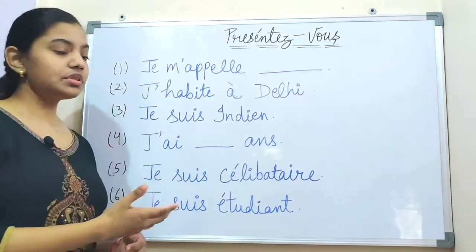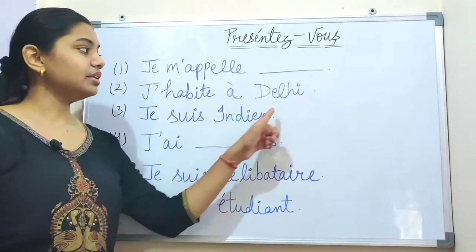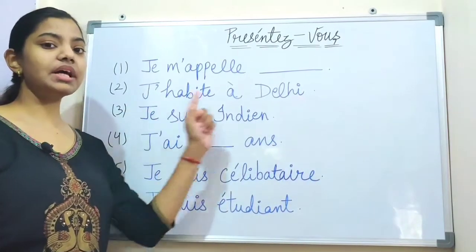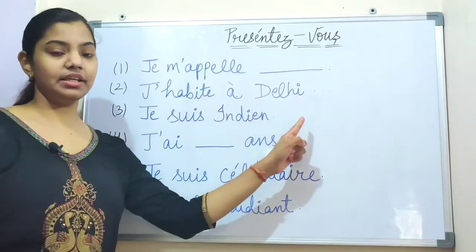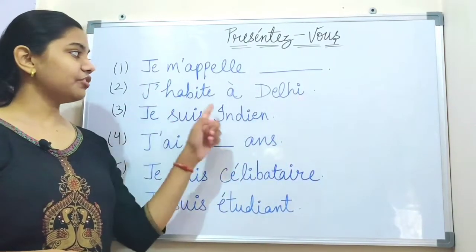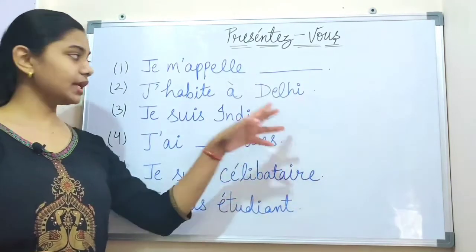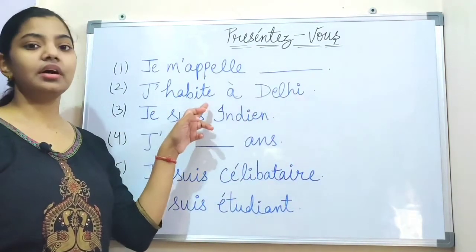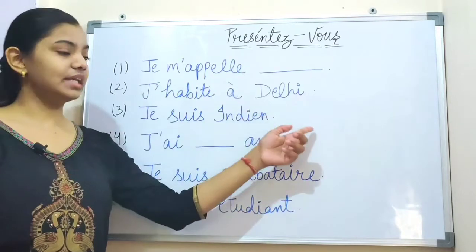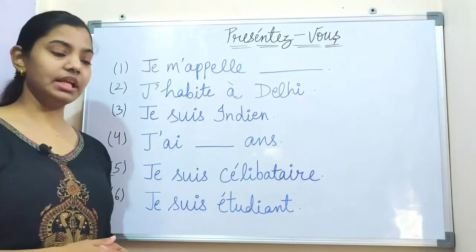After your name, you say: J'habite à Delhi — that means 'I live in Delhi'. J'habite means 'live', so j'habite à Delhi means 'I live in Delhi'.